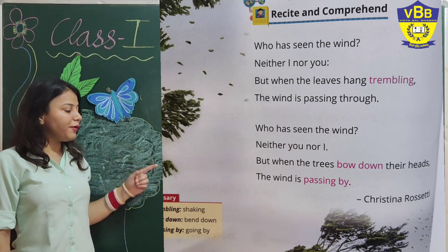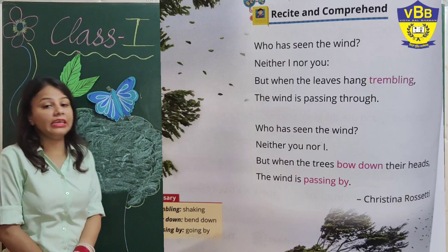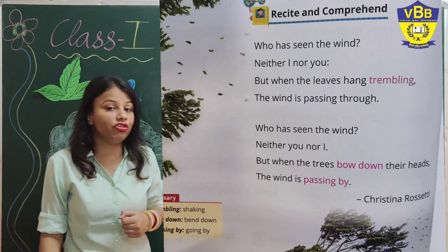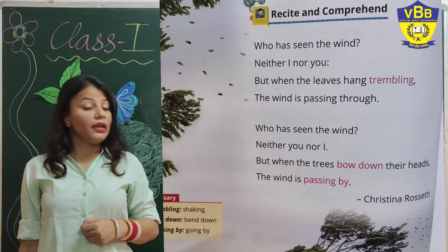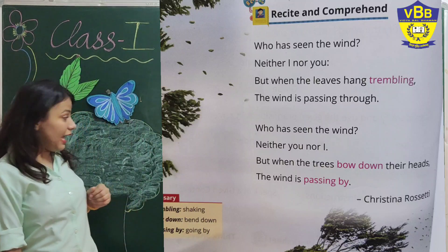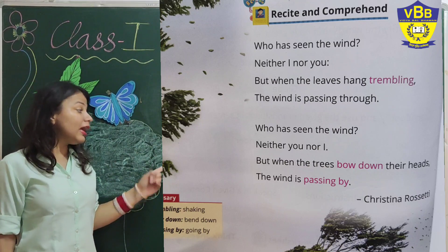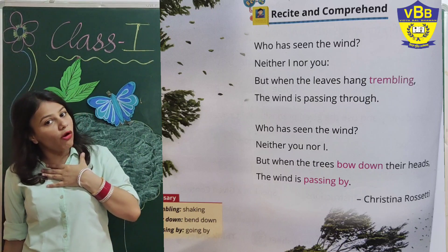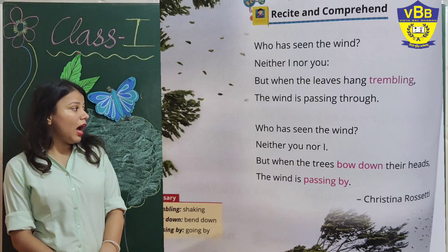Now let's move forward and read the second paragraph. Again it asks: 'Who has seen the wind?' Nobody has seen the wind. The second line is 'Neither I nor you' — I have also not seen the wind and you have also not seen the wind.